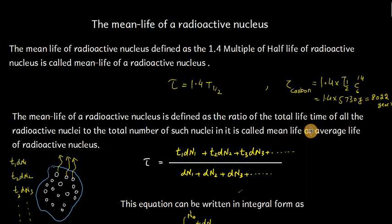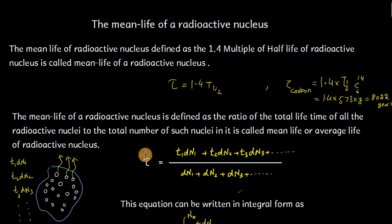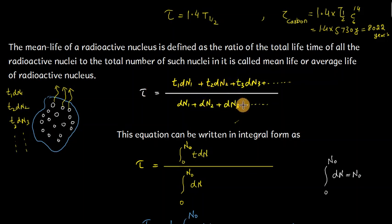Now we need to prove how mean life equals 1.4 times t-half. According to this definition, suppose we have an array of radioactive nuclei. At time t1, a certain number dn1 particles decay, so its contribution is t1·dn1. Similarly, at time t3, more particles decay, giving the product t3·dn3. If we add all these products and divide by dn1 + dn2 + dn3 and so on, this ratio gives us the mean life or average life of the radioactive nucleus.